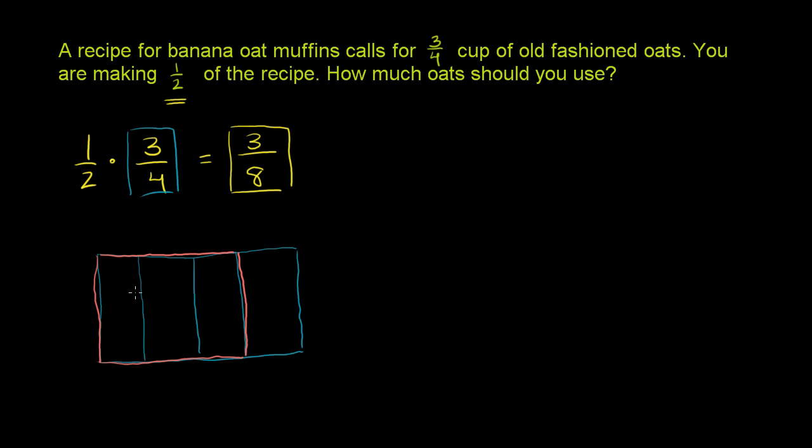Now, you want half of this, right? Because you're going to make half of the recipe. So we could just split this in half. Let me do this with a new color. So you would normally use this orange amount of oats. But we're going to do half the recipe, so you'd want half as many oats. So you would want this many oats.